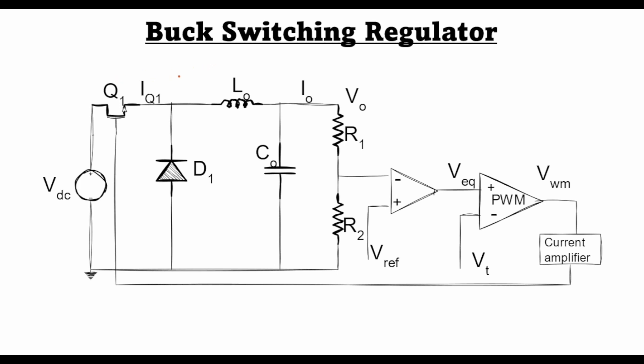In my previous videos we were looking at linear regulators, and there we saw that the dissipation in the series pass element was one of the limiting factors with regards to efficiency. In switch mode power converters, the transistor is not operated in the active region but rather it is switched on and off periodically.